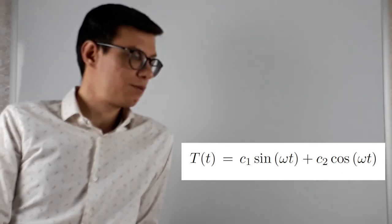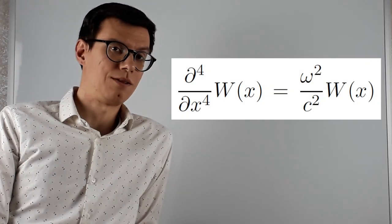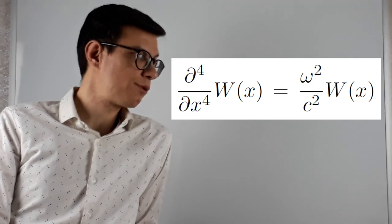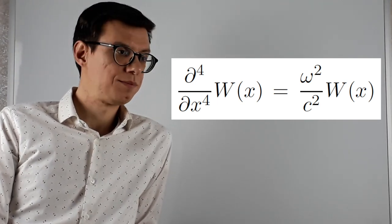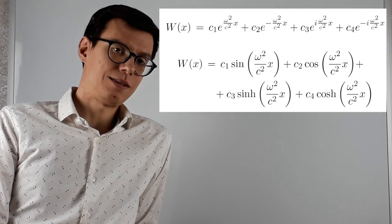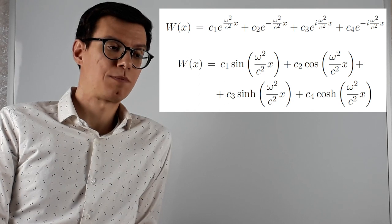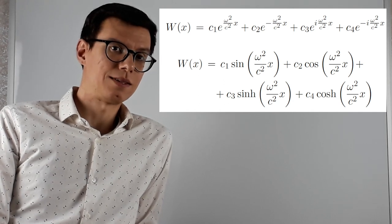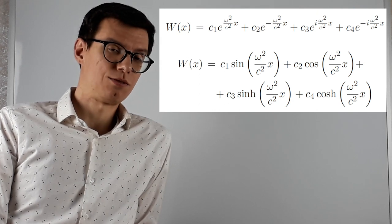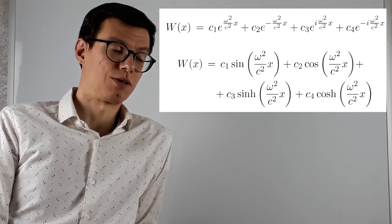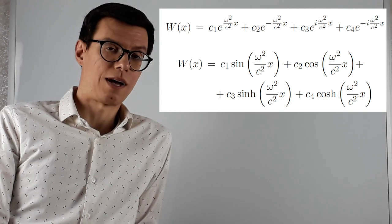After, we can pass to this other ordinary differential equation of fourth order in capital W. And we find what? We find a linear combination of exponentials—real and complex exponentials. We can write the solution as a linear combination of sine, cosine, and hyperbolic functions.